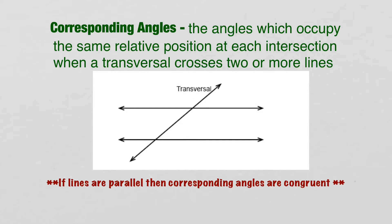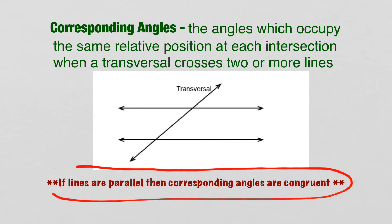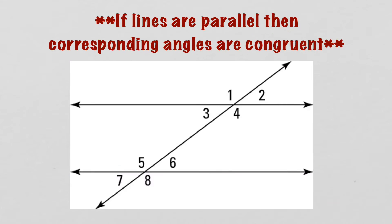The first thing we need to understand is corresponding angles. Corresponding angles are angles which occupy the same relative position at each intersection when a transversal crosses two or more lines. The really important part is that if lines are parallel, corresponding angles are congruent — meaning they are equal. These lines are parallel, so we know the corresponding angles are going to be congruent.